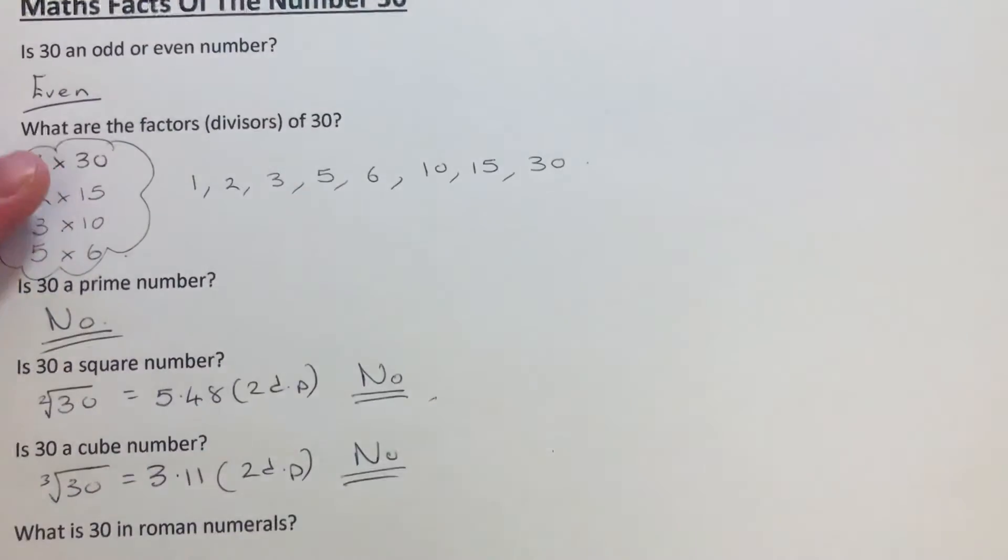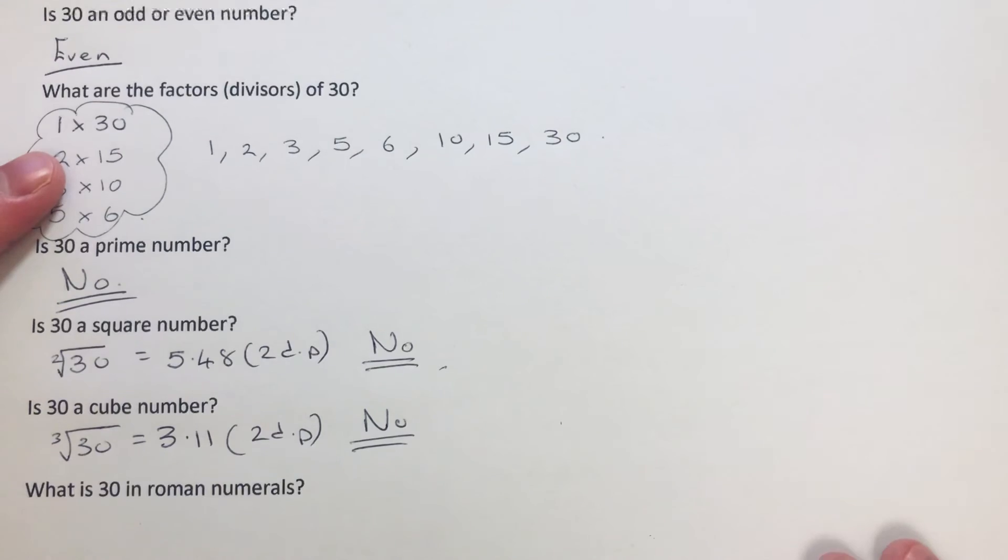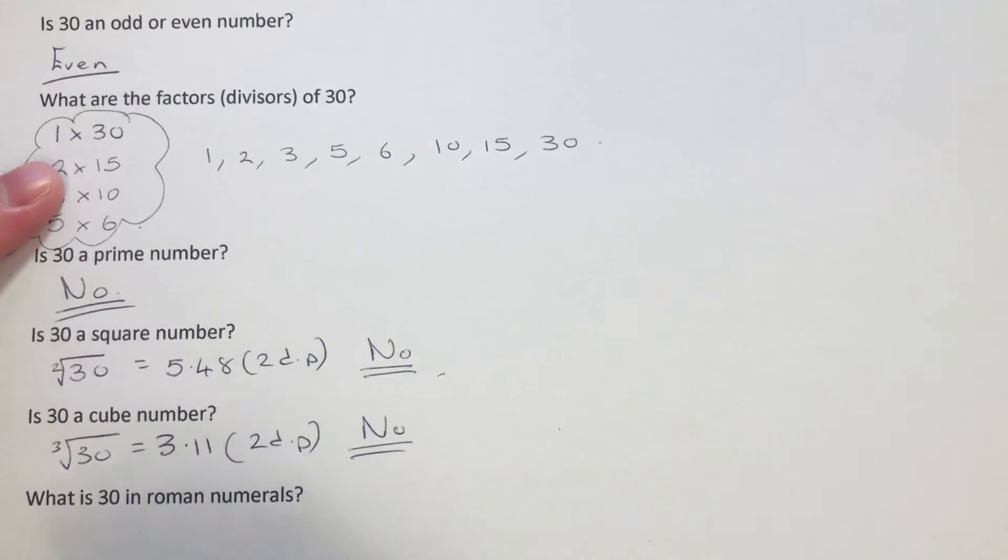So our final question is: what is 30 in Roman numerals? We can just do three X's - so 10, 10, 10 - which gives 30.